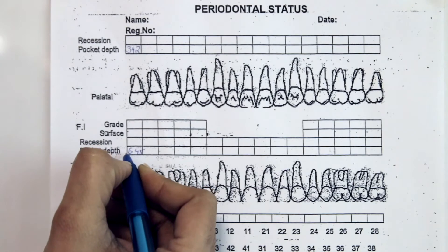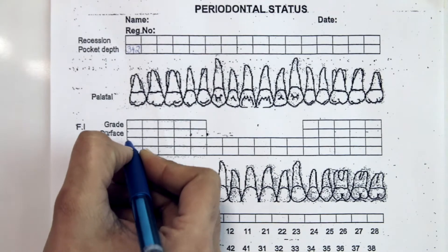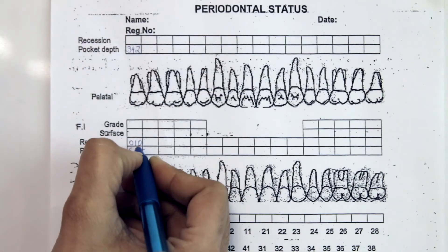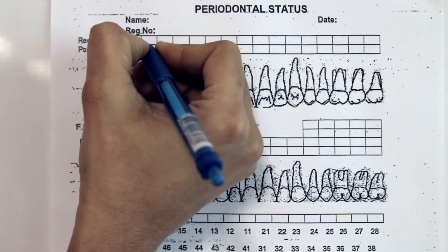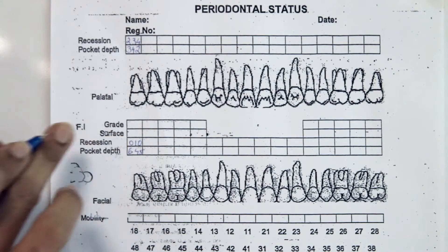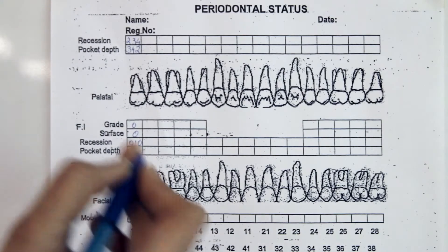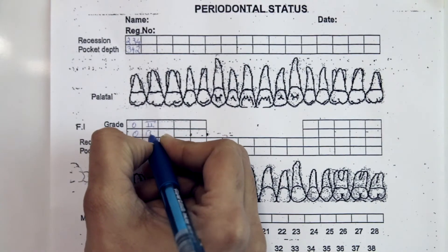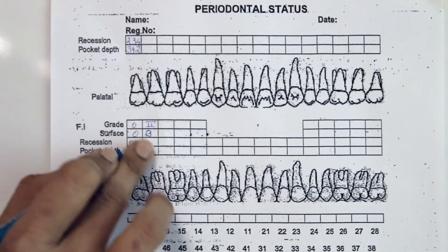Similarly, on the same tooth, recession is measured from the CEJ to the gingival margin. You can record zero, one, zero if the patient has minimal recession, or higher values like two, three, four depending on how much recession is present — for example, if there is recession only on the mid-buccal surface or significant recession palatally. If there is no furcation, you record zero. If there is a furcation on tooth 17, you write grade 2 buccal, indicating a buccal furcation is present.